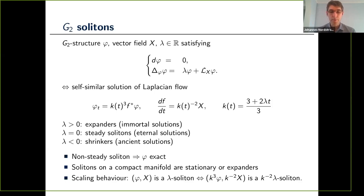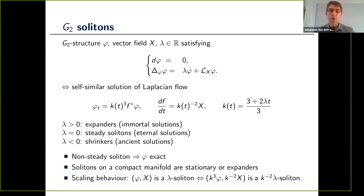Some fairly elementary observations about solitons: if lambda is non-zero, the G2 three-form φ must be exact. This explains why we prioritized λ²⁺ of CP² and S⁴ over the spindle bundle of S³, because on the spindle bundle the Bryant-Salamon G2 structure is non-exact. Also, on a compact manifold any soliton must be either an expander or a trivial steady soliton, so the only non-trivial solitons on compact manifolds are expanders, which makes it natural to look for non-compact solitons.